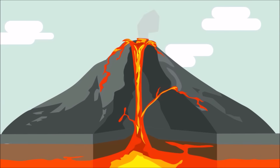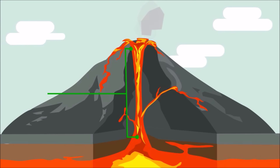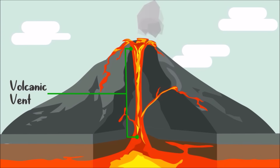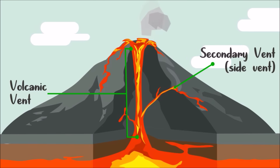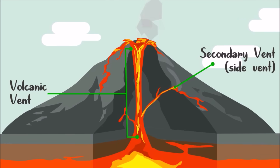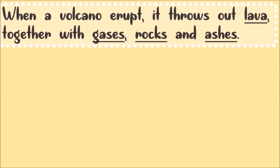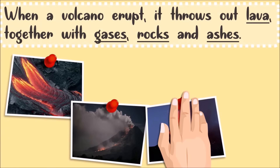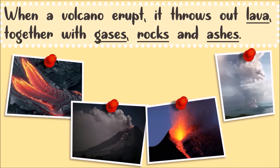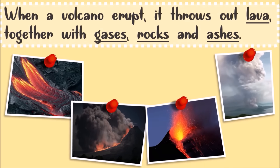This cylindrical channel that connects the crater to the magma chamber is called the volcanic vent. Other volcanoes have a secondary vent or side vent, which is also a way out for the magma. When a volcano erupts, it throws out lava together with gases, rocks, and ashes.